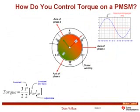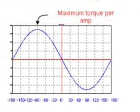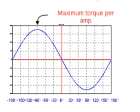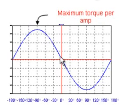With a three-phase machine we have three currents to control instead of just one. On a space vector diagram, the sum of those three currents creates a current vector with a certain magnitude and angle. By controlling the three phase currents to be just the right values, we can create a current vector at any angle and magnitude we want. So the question becomes: what angle should we aim for?